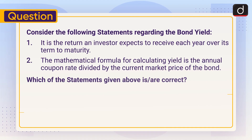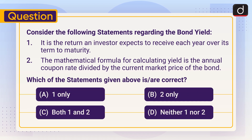Now it's time for the practice question. Consider the following statements regarding bond yield: One — it is the return an investor expects to receive each year over its term to maturity. Two — the mathematical formula for calculating yield is the annual coupon rate divided by the current market price of the bond. Which of the statements is or are correct: one only, two only, both one and two, or neither one nor two? Send the answer in the comment section. Stay tuned for the next episode. Thanks for watching, have a great day.